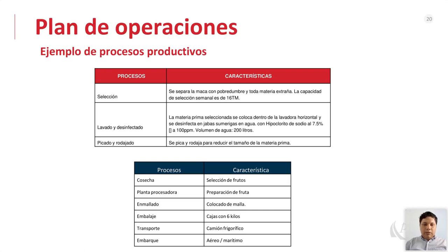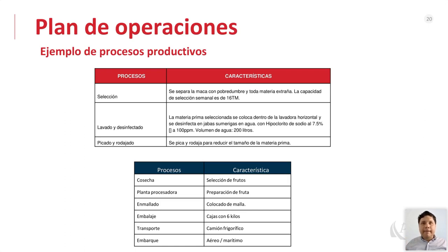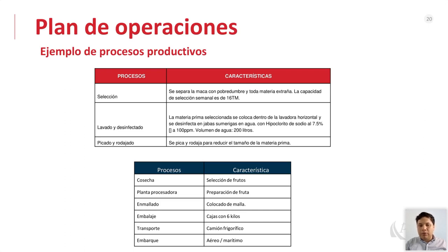Para el mango, el proceso incluye: cosecha, selección de frutos, planta procesadora, y preparación de la fruta. El mango a veces necesita procesamiento porque le falta madurez o encape; a través de algunos gases especiales hacen que madure un poco más. Luego viene el enmayado (colocado en malla), embalaje en cajas con 6 kilos, transporte en camión frigorífico, y embarque aéreo o marítimo. Esos son dos ejemplos de procesos productivos: uno de la maca y otro del mango.